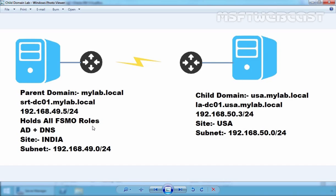In this lab, I have a Domain Controller in our India site named srt-dc01.mylab.local, and this is our parent domain named mylab.local. The IP address of this domain controller is 192.168.49.5 and it holds all the FSMO roles. On the other end, we have another server named la-dc01 with IP address 192.168.50.3, and on that server we are planning to install the child domain. Site-India and Site-USA are connected through VPN.